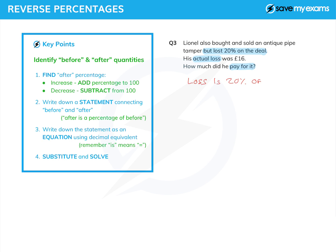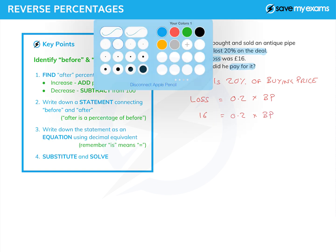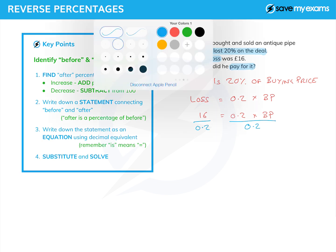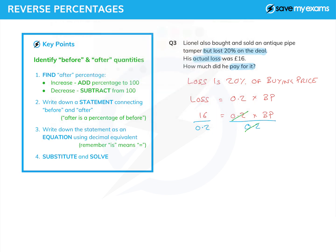We just need to be careful that we are dealing with the right before and after quantities. In this case it's not the selling price but the loss we're dealing with. So we say: loss = 0.2 (the decimal equivalent of 20%) × buying price. Therefore 16 = 0.2 × buying price. Dividing both sides by 0.2, buying price = 16 ÷ 0.2, which is £80. So he bought it for £80 and lost 20% of that, which is £16. And that is how I would do reverse percentages.